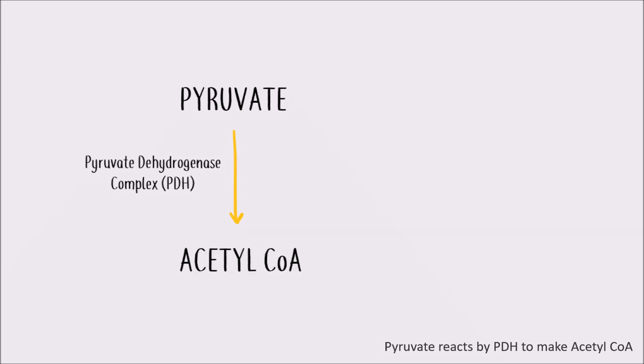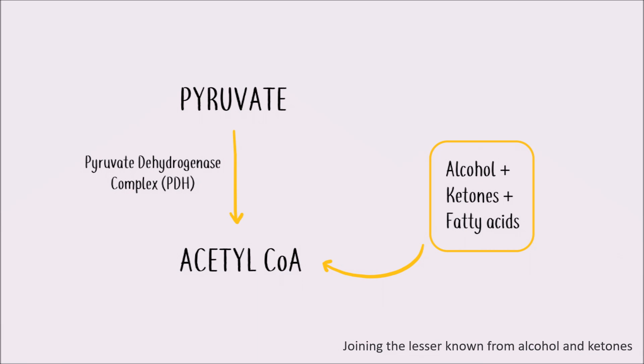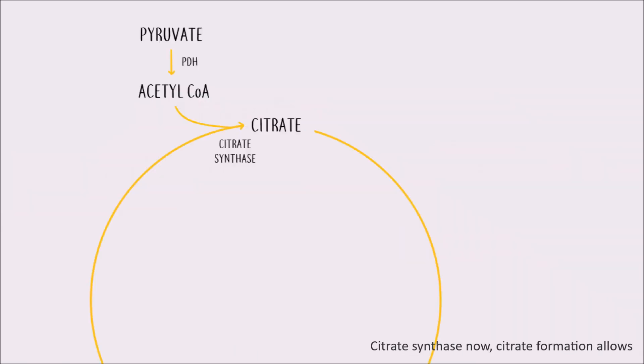Pyruvate reacts by PDH to make acetyl coenzyme A, joining the cycle from alcohol and ketones and fatty acids when they degrade. Citrate synthase now catalyzes citrate formation, and aconitase makes isocitrate.